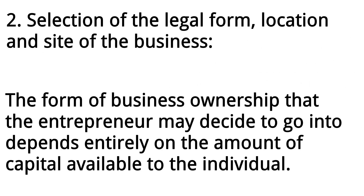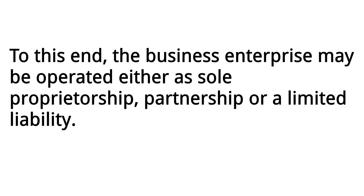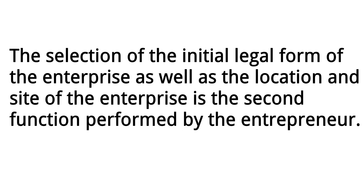2. Selection of the Legal Form, Location, and Site of the Business. The form of business ownership that the entrepreneur may decide to go into depends entirely on the amount of capital available to the individual. The business enterprise may be operated either as sole proprietorship, partnership, or a limited liability. The selection of the initial legal form of the enterprise, as well as the location and site of the enterprise, is the second function performed by the entrepreneur.